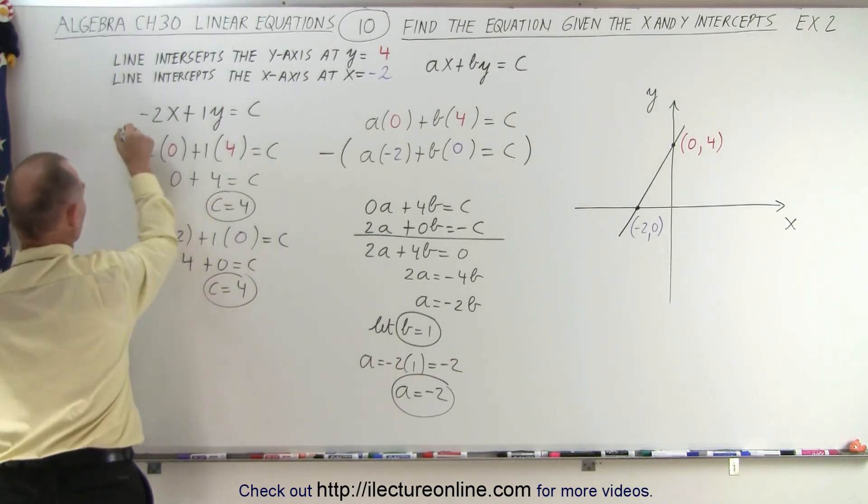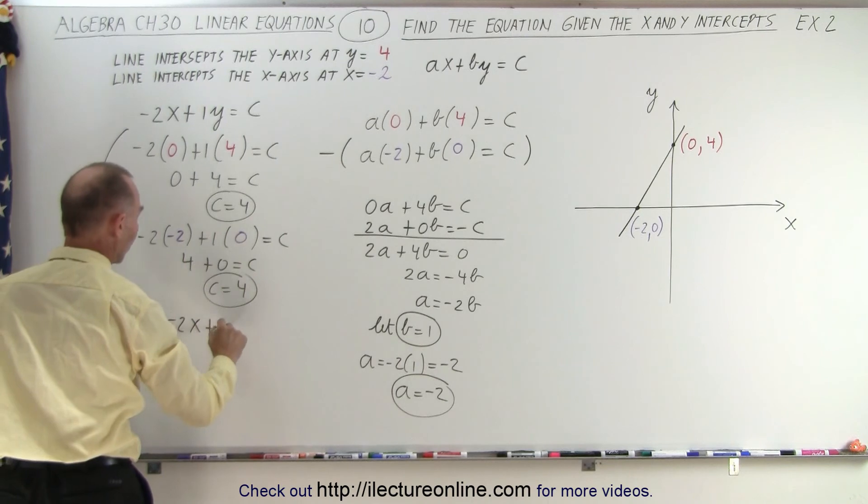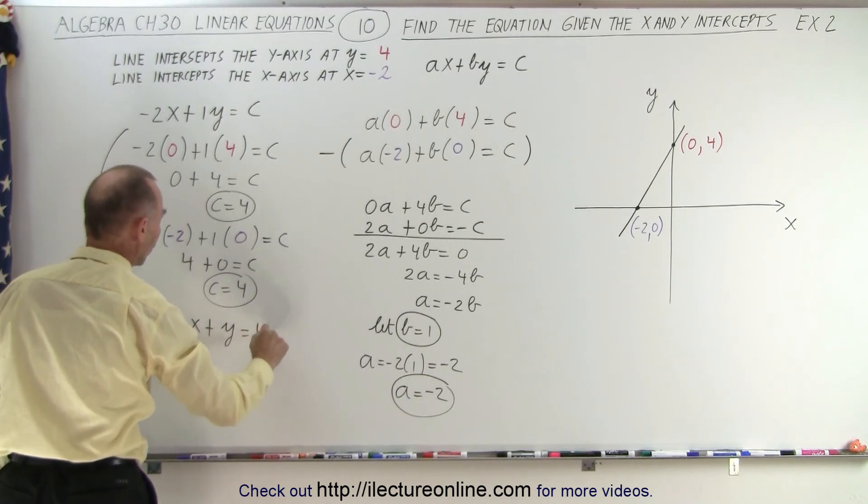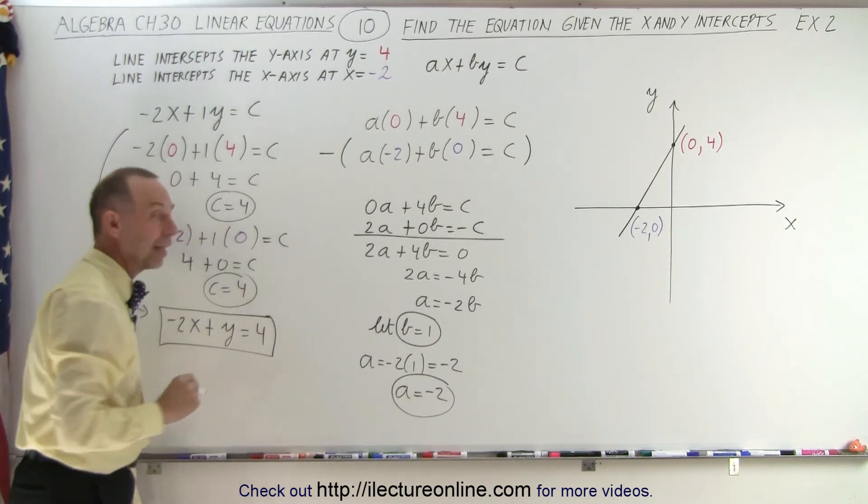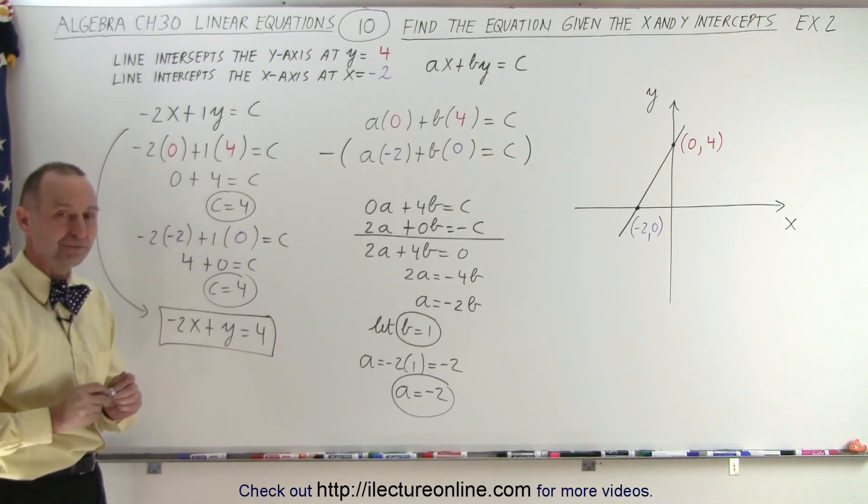We plug that back into our equation, and now we can see that negative 2x plus 1y is equal to 4. And that is the equation of the line we were looking for. And that is how it's done. Thank you.